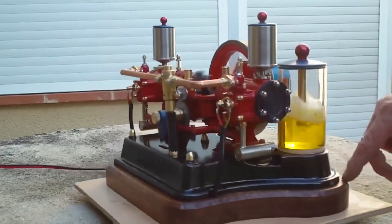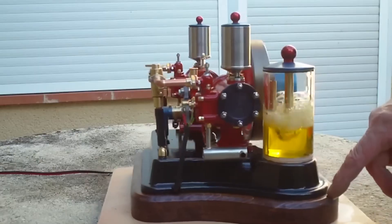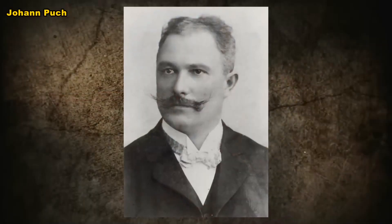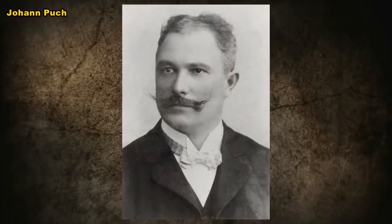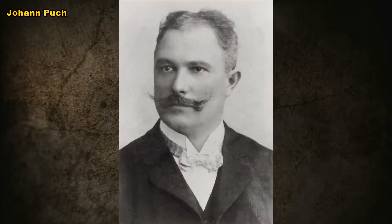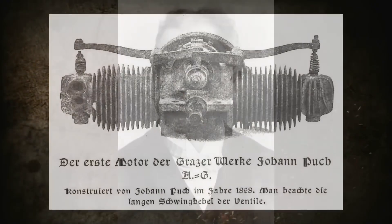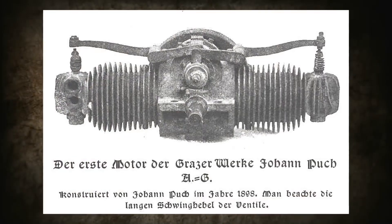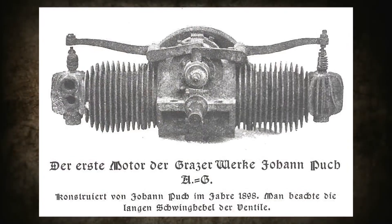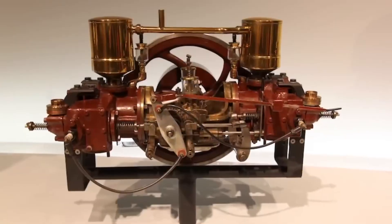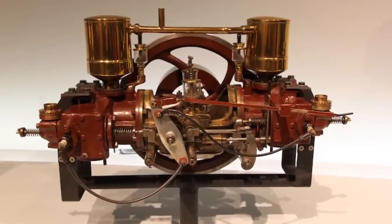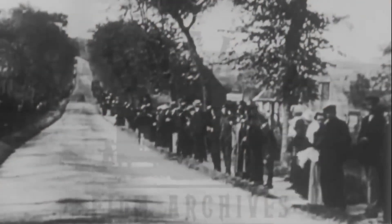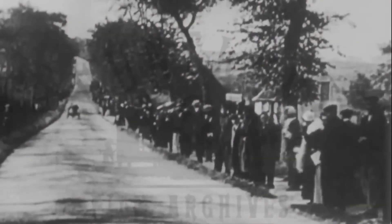He called this design a contramotor because of the opposite arrangement of the cylinders in the horizontal plane, and many sources translate this name as an opposed engine. Just a year later, in 1898, the Slovenian Johan Puk, independently of Carl Benz, presented his own version of the opposed engine. This engine configuration quickly earned a reputation for power and efficiency, reinforced by sporting achievements.